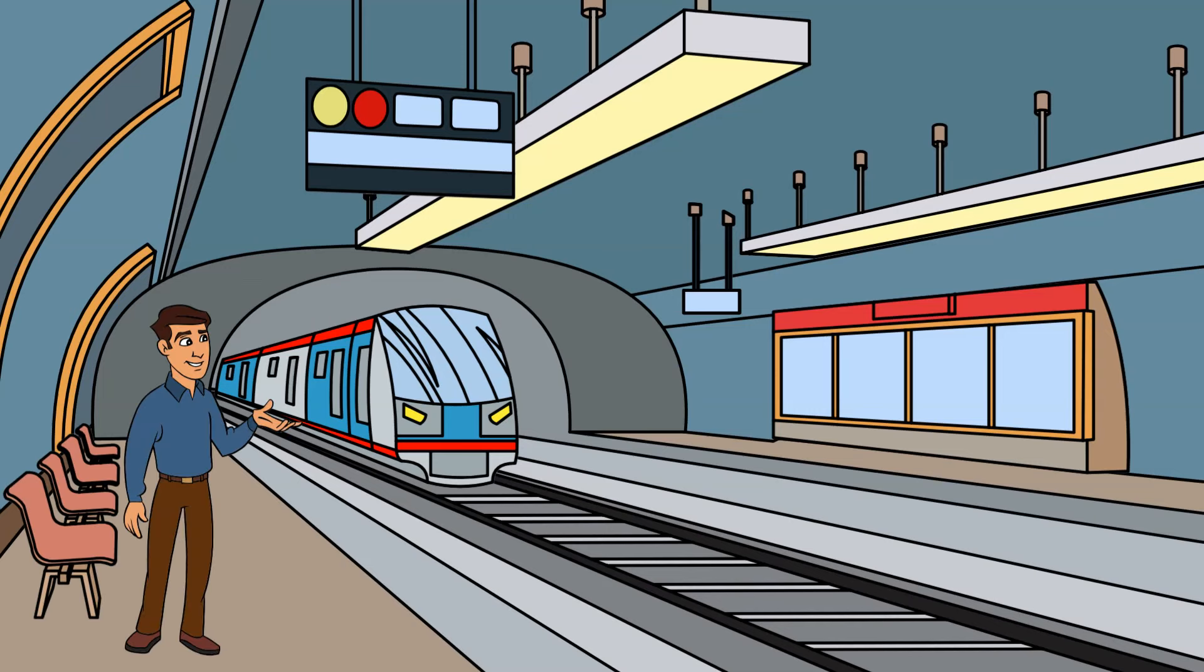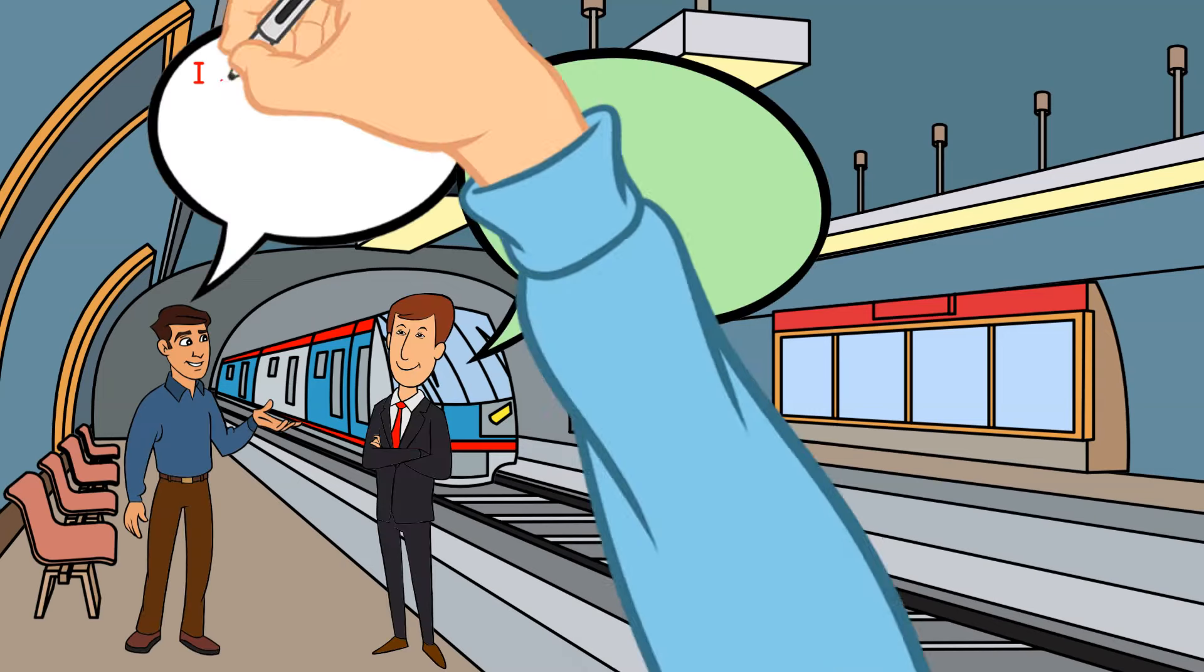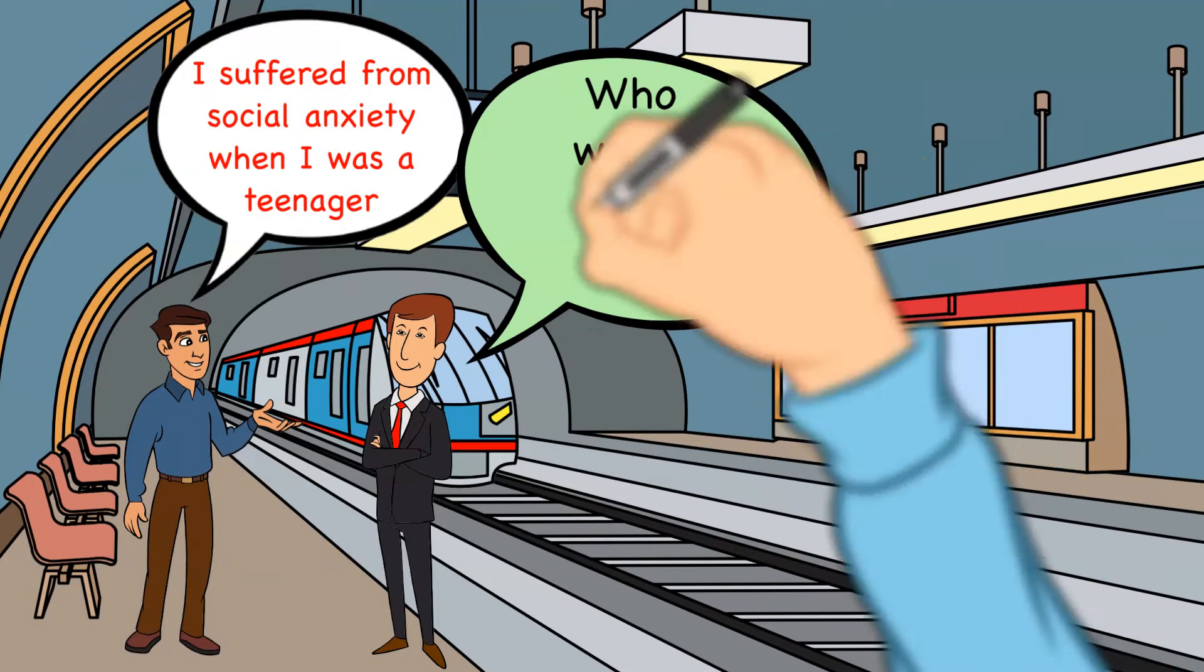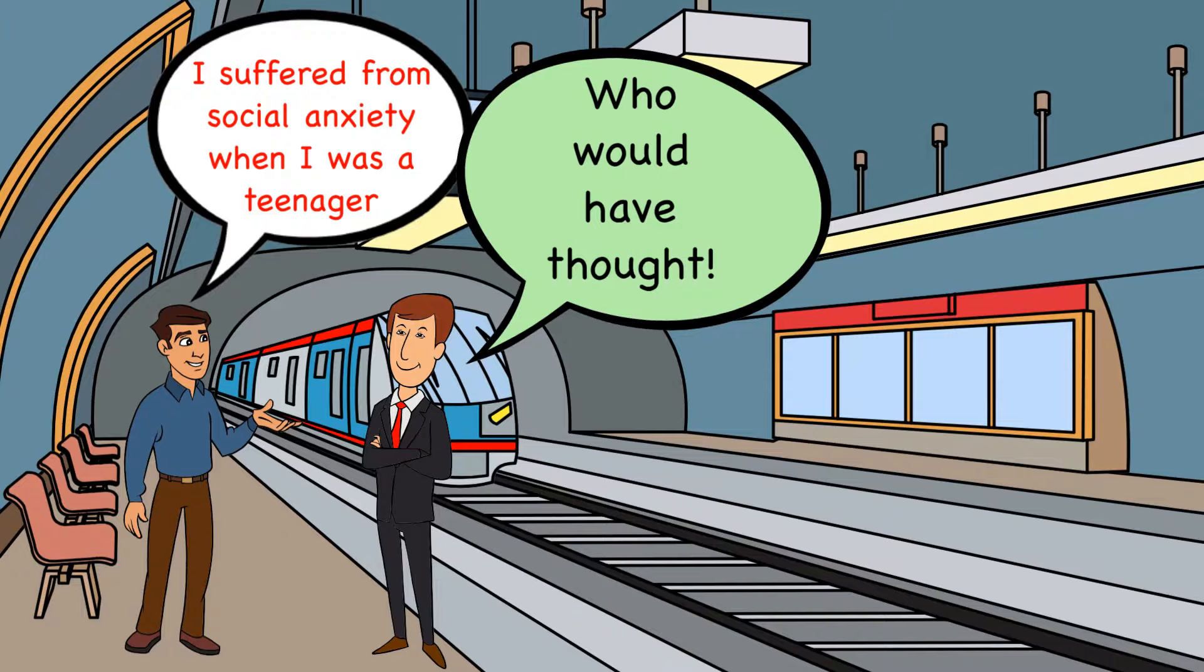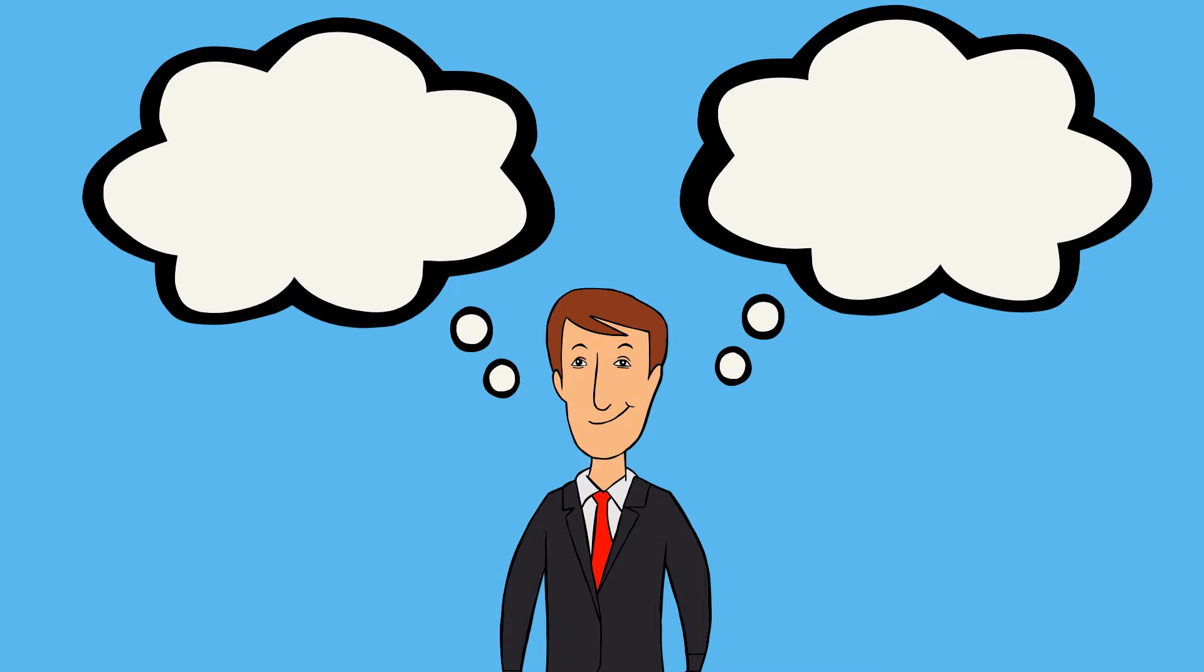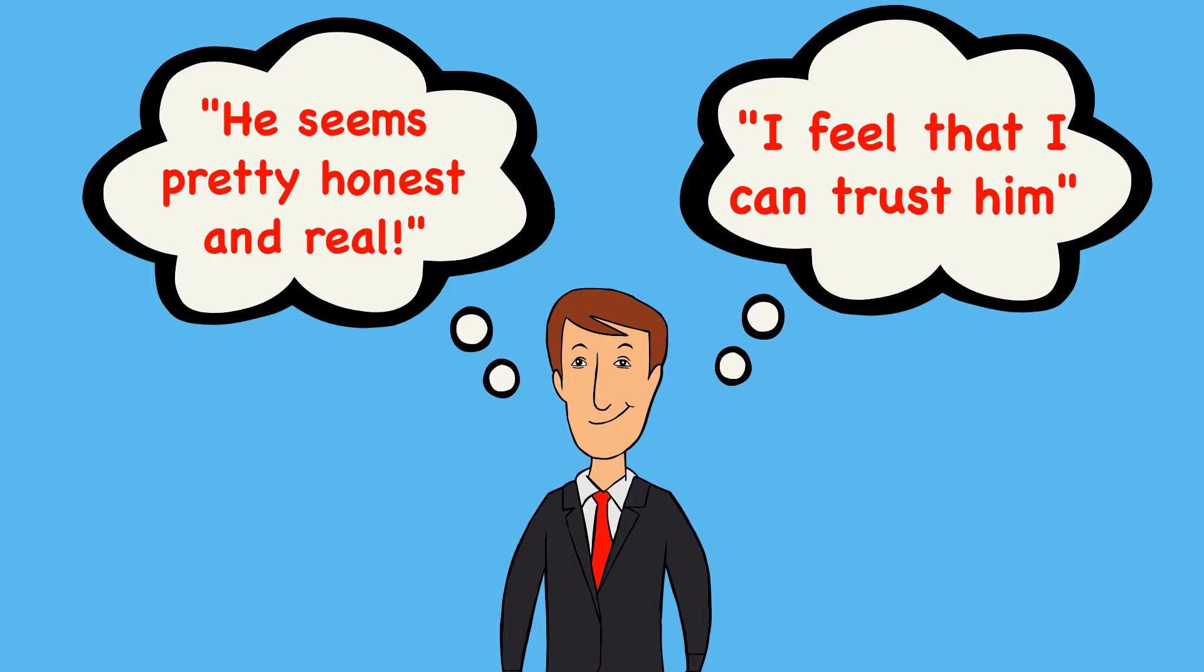For example, when I'm meeting new people and we are making small talk, I like to share how I was the most insecure person when I was a teenager up to my early twenties and that I really struggled with my social life. This will instantly make the other person feel secure because I am self-aware and mature enough to recognize a shortcoming in my life that I improved and that it's okay to have flaws and to talk about them.